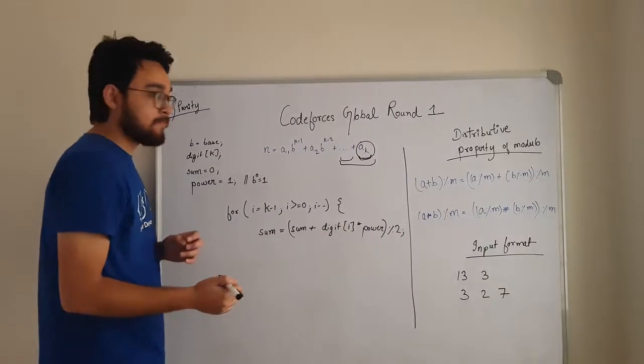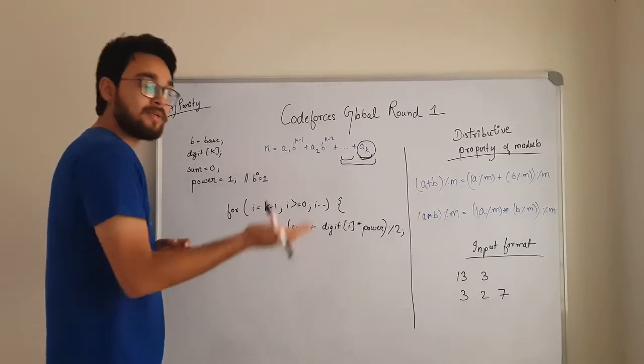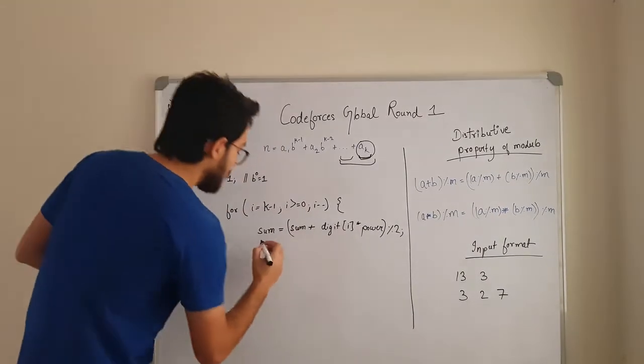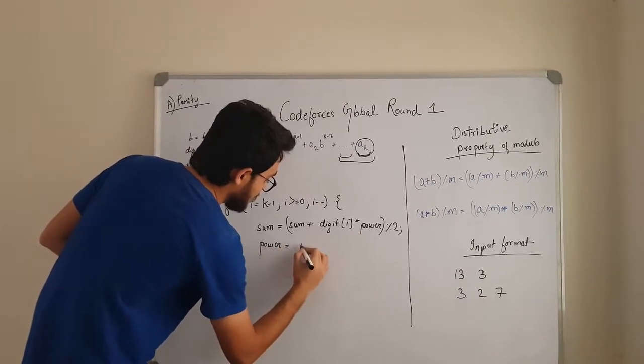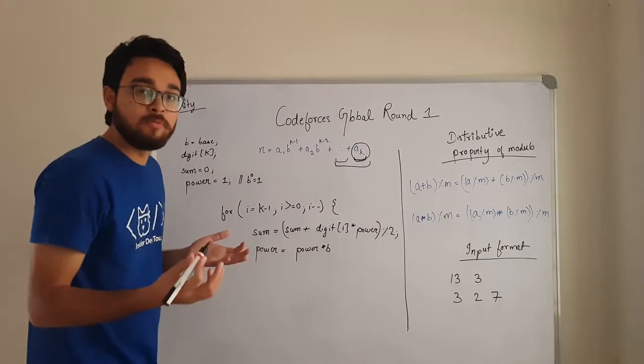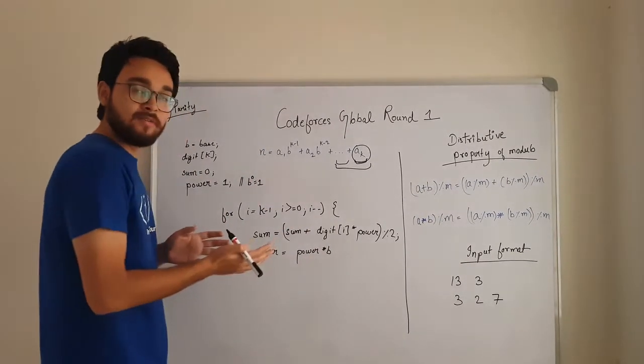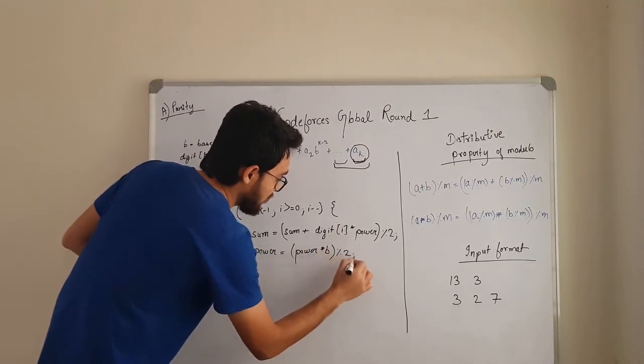Now we need to update this power. Because first time it is 1. In the next iteration it needs to be b. Second time it needs to be b squared. So how will we update power? Power is equal to power into b. Now as we said, we will be moving the modulo inside the multiplicative terms as well. So we will apply a modulo here as well.